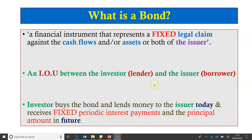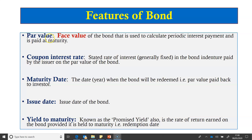The investor purchases the bond and lends money to the issuer today. In return, the issuer agrees to make fixed periodic interest payments and repay the principal amount in the future. The key features of a bond include the par value, the coupon rate, maturity date, issue date, and the yield to maturity of the bond.